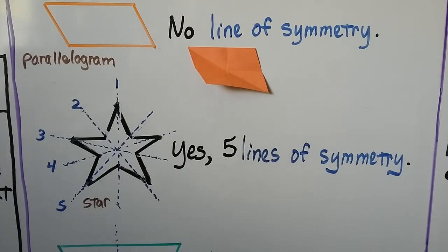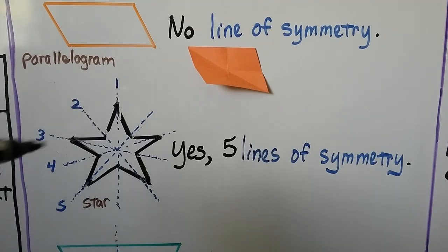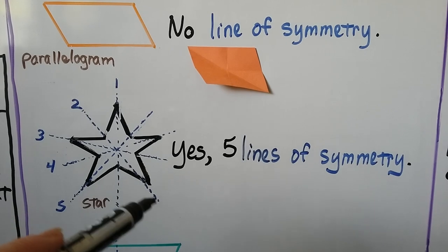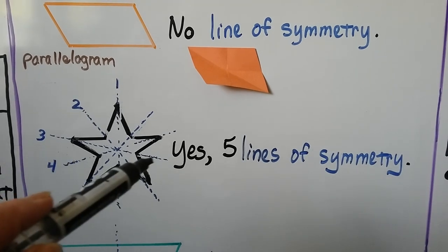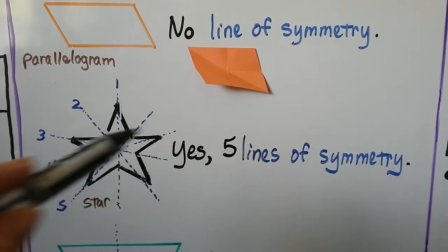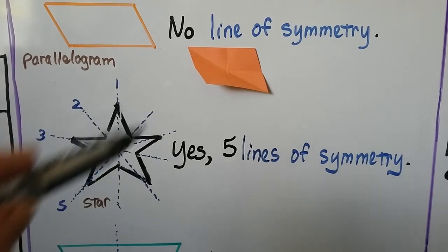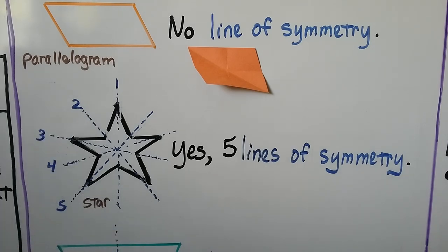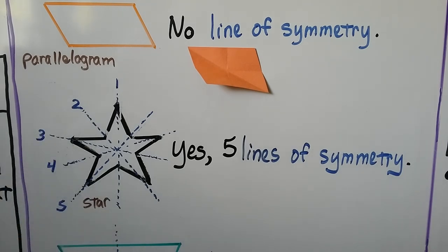For this star — we have a five-point star — there are five lines of symmetry. We've got one, two, three, four, and five. We could fold them on any one of those lines of symmetry and it would coincide with itself.